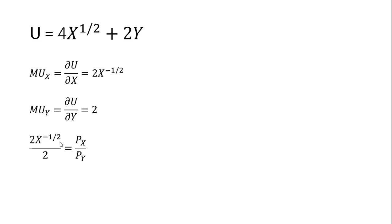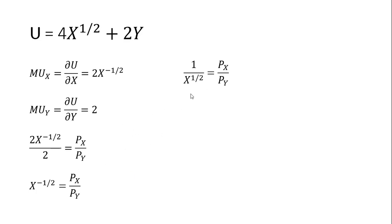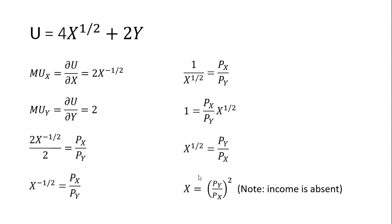On the left-hand side we have the marginal utility of good x divided by the marginal utility of y, and we set that equal to the ratio of prices — the price of good x to the price of good y. Now we simplify and solve for x. The 2's cancel, leaving x raised to the minus one-half on the left-hand side. Following the rules of exponents, x to the minus one-half is brought into the denominator. Multiplying both sides by the square root of x, then by the price of good y divided by the price of good x, we get x to the one-half power equals the following. Finally, squaring both sides to eliminate x to the one-half, we have the demand for good x.